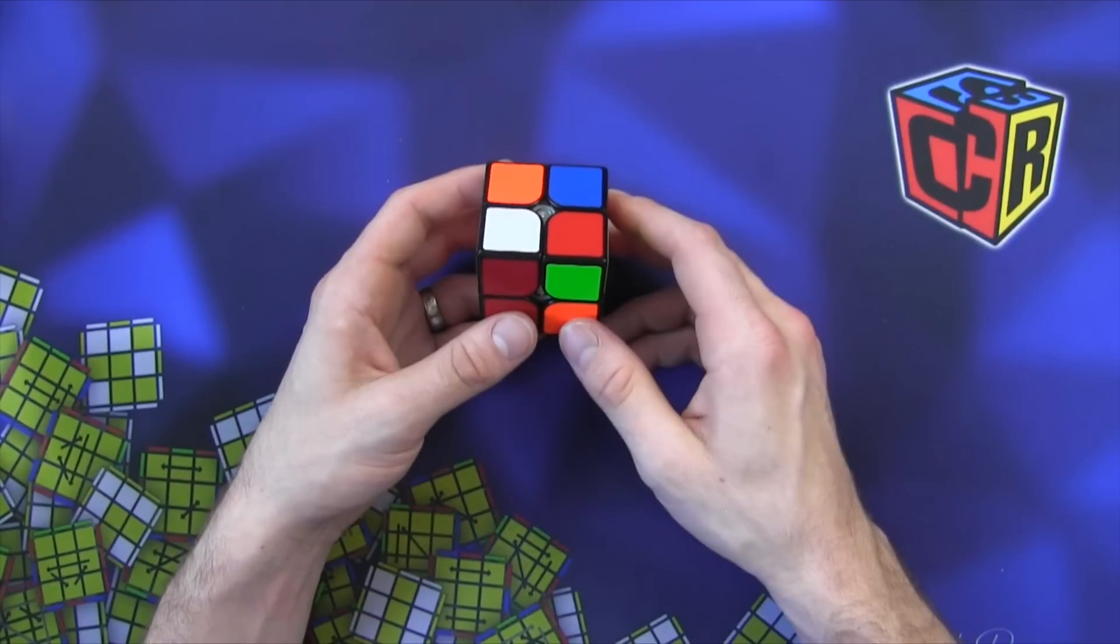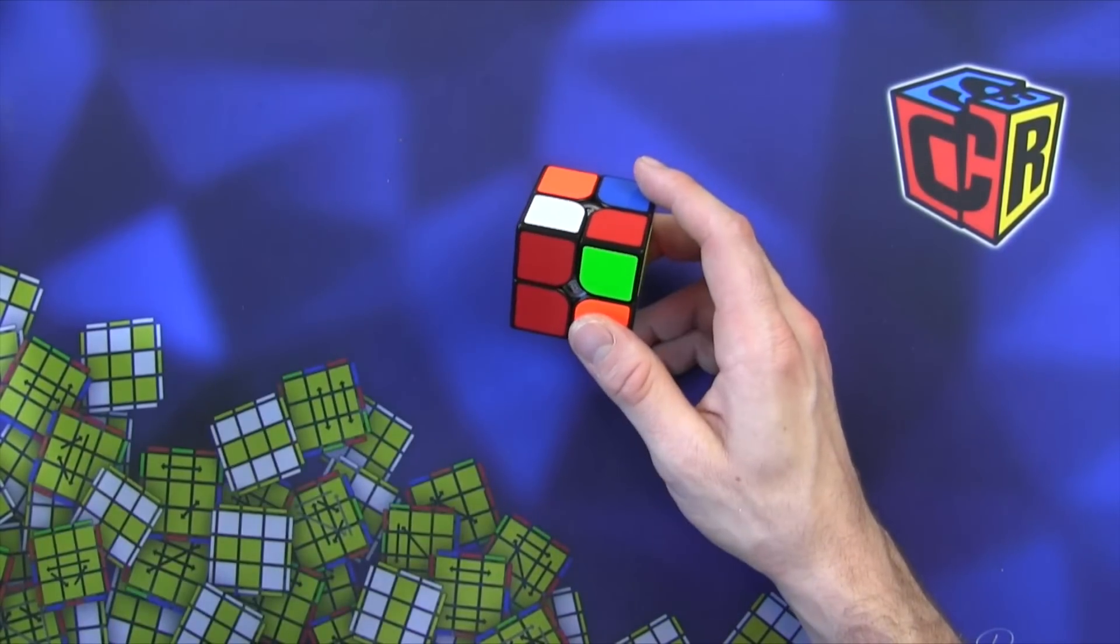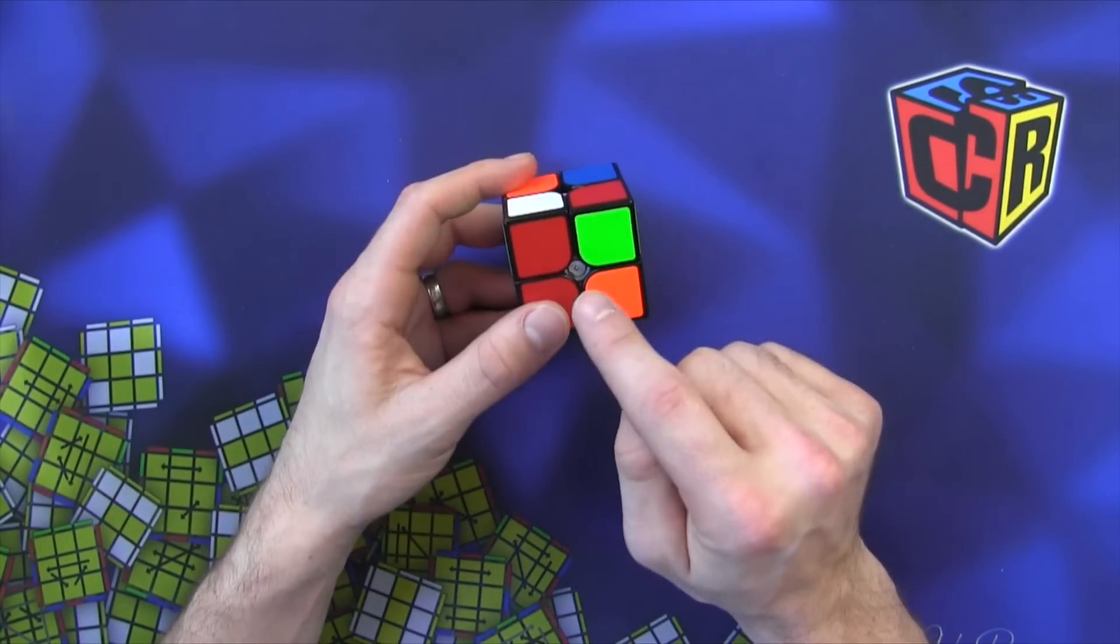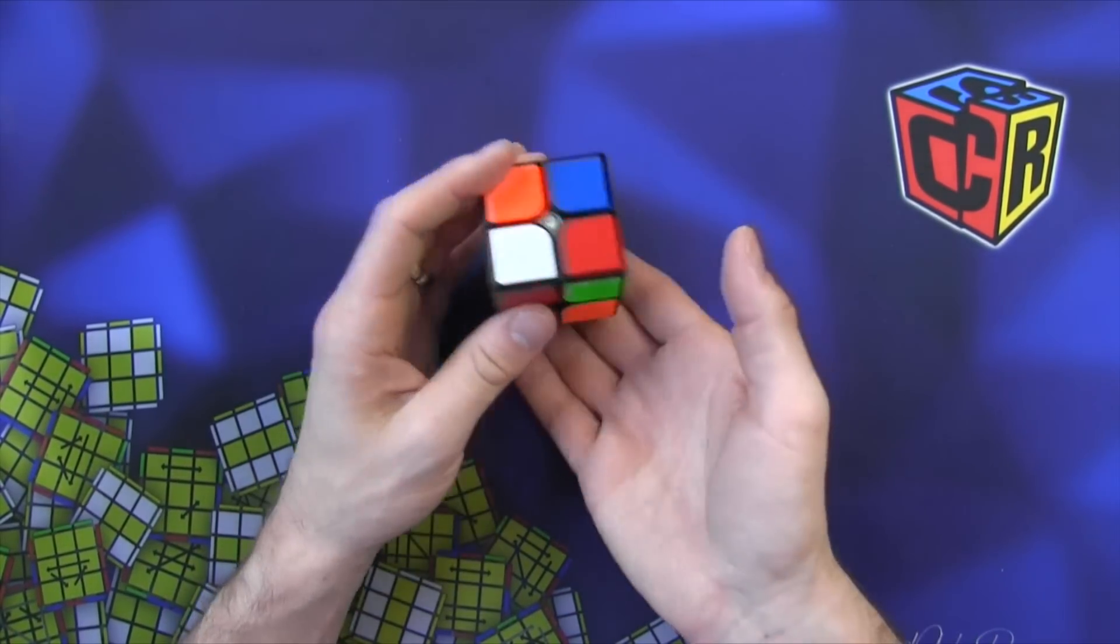So I know that red's in front, orange is in back, green is here, blue is here, yellow on top, white on bottom.